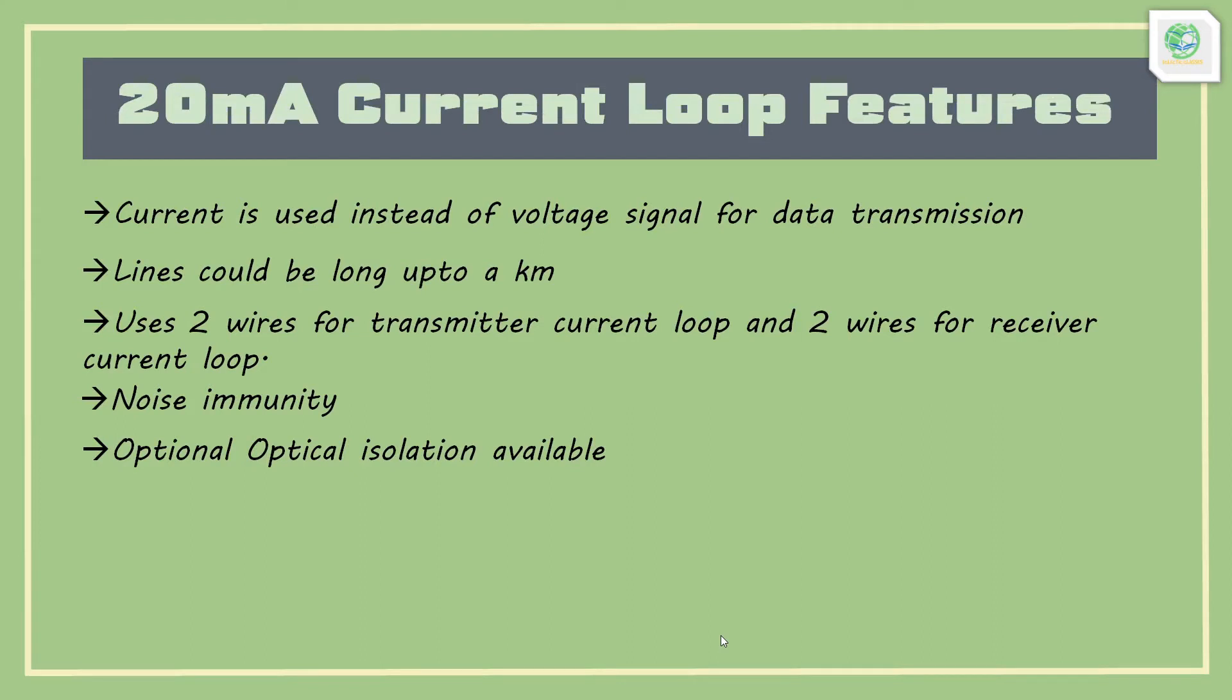It uses two wires for transmitter current loop and two wires for receiver current loop. It has inherent noise immunity as current is being used instead of voltage. Optical isolation can be provided in signal transmission for electrical safety purposes.